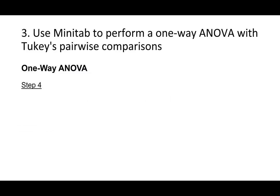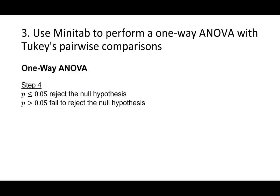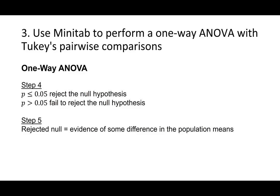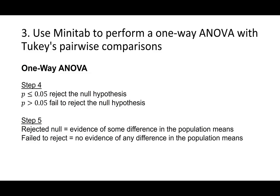Step 4 is to make a decision. We have the same rules as before, assuming a 0.05 alpha level. If the p-value is less than or equal to 0.05, reject the null hypothesis. If p is greater than 0.05, fail to reject the null hypothesis. Step 5 is to state a real-world conclusion. If you rejected the null, there is evidence of some difference in the population means, but an ANOVA will not tell you where those differences are. To find where the differences are, we'll need a post-hoc test such as Tukey's pairwise comparisons. If you failed to reject the null, there is no evidence of any difference in the population means, and you typically don't do any post-hoc tests.